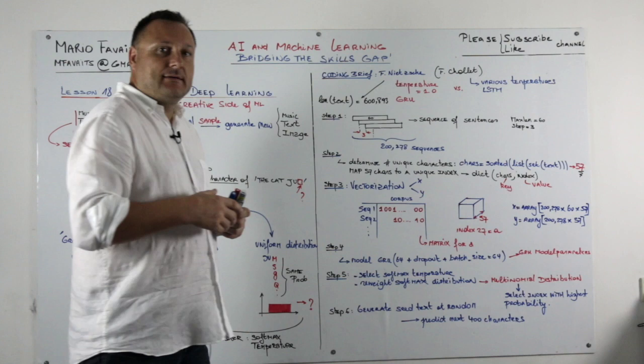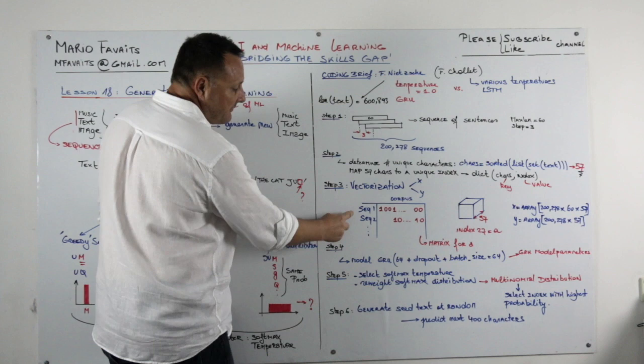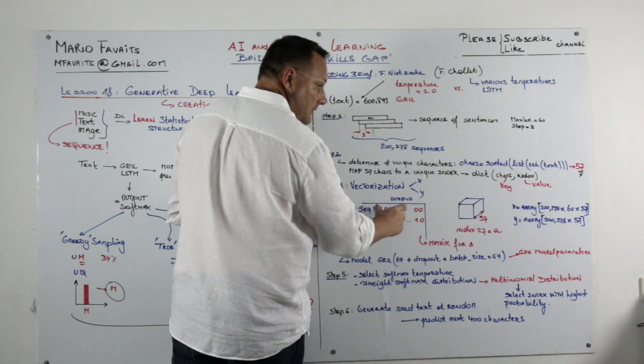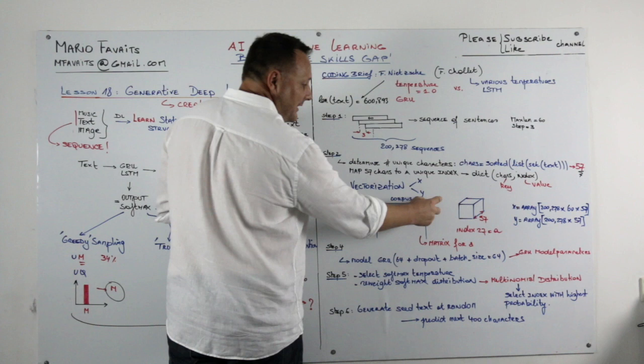Then we are going to vectorize our text. Typically what we have is we have all these three overlapping sequences here and we have the corpus here. And we have a depth of 57 indices. So the depth of this matrix, what makes it from 2D to 3D, is that there is a depth of 57 unique characters.